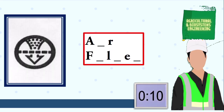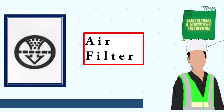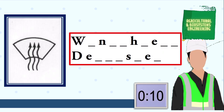Next symbol, your 10 seconds starts now. The answer is air filter. Next symbol, your 10 seconds starts now. The answer is windshield defroster. Next symbol, your 10 seconds starts now.